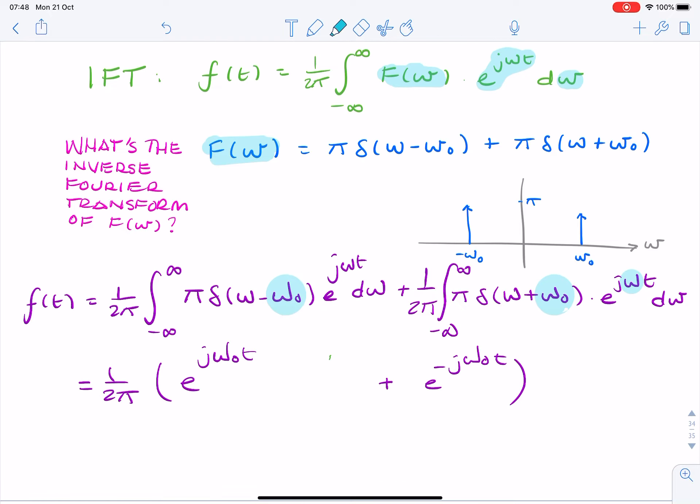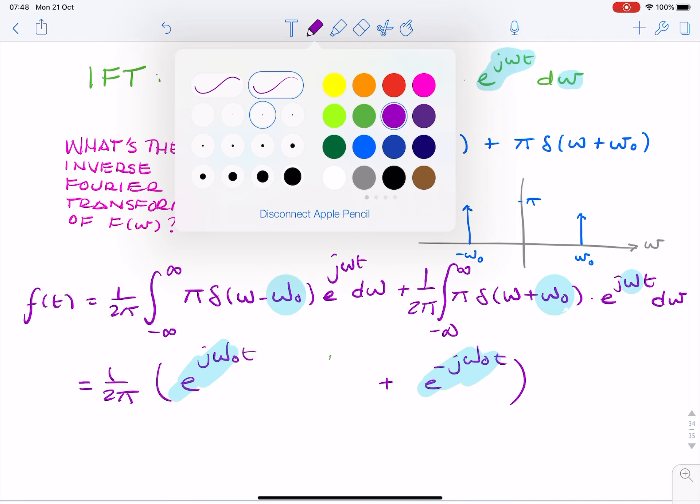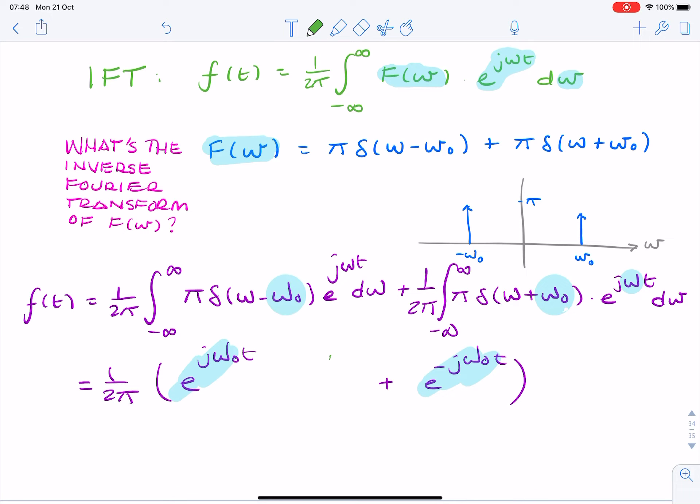And if you look carefully, when you have two complex exponentials added together, that simplifies to cosine. Remember the Euler definition of cosine? And what I forgot to do was to cancel the pi. So, that gives us the textbook definition of cosine omega nought t.